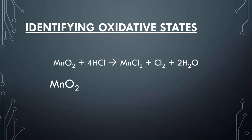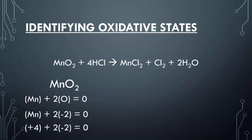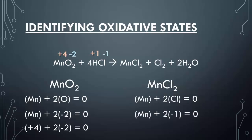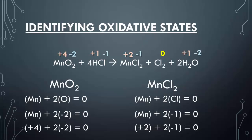For our last problem, let's analyze all the different compounds. First, manganese oxide: one manganese and two oxygens. Plug in the charge for oxygen and manganese has to have a positive four charge. Looking at hydrochloric acid — you have four moles of it, but that has no influence on the charge. Hydrogen is positive one and chlorine is negative one. For manganese chloride, chlorine is negative one, so manganese works out to positive two. Diatomic chlorine is uncombined, so it's zero. Water: oxygen has a negative two charge and hydrogen has a positive one charge — water is always plus one, minus two.